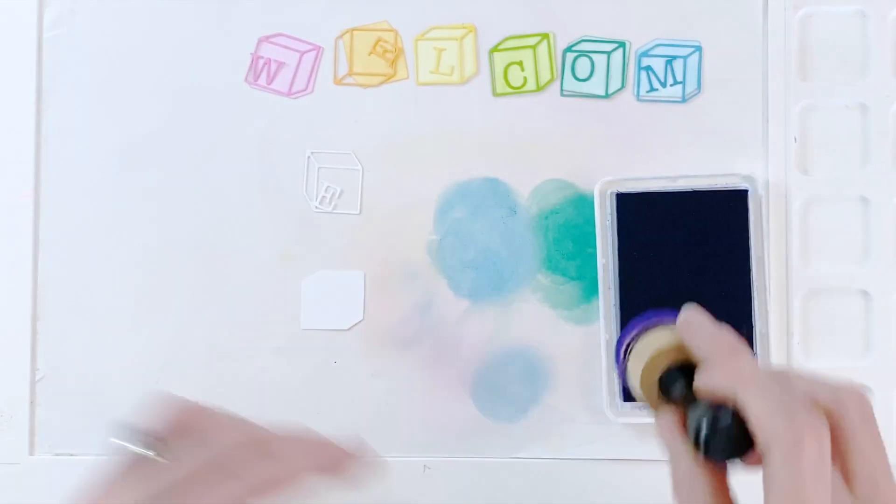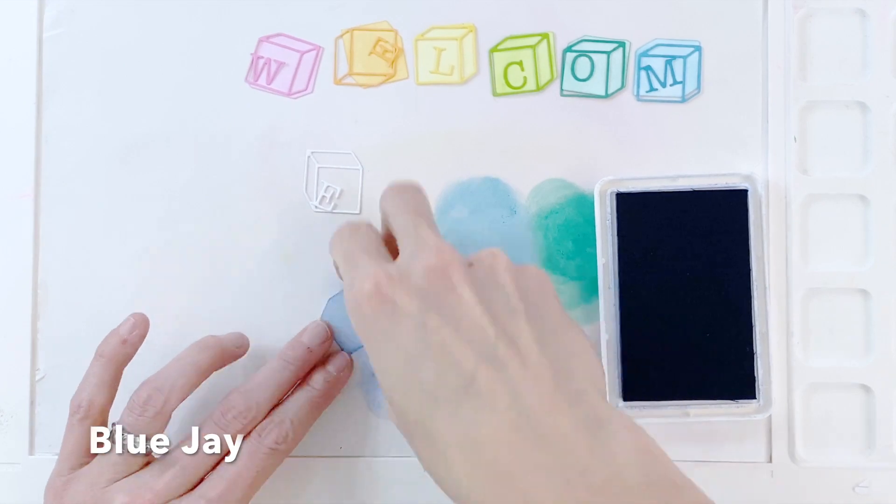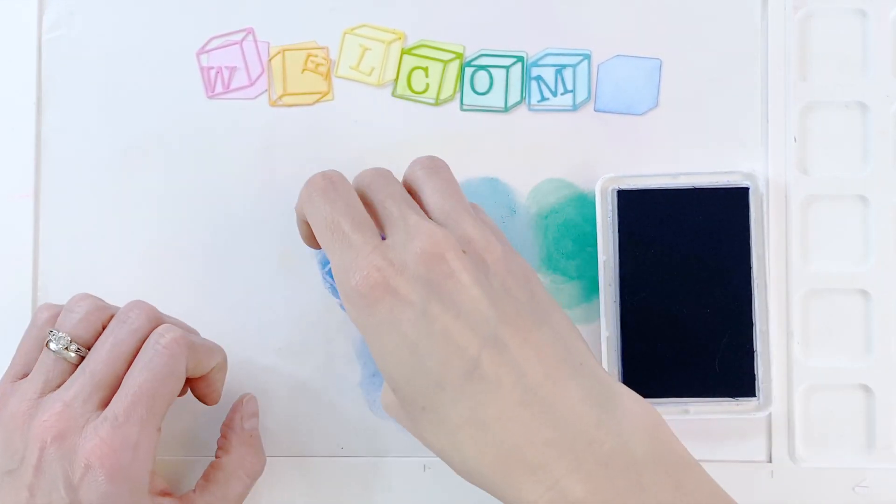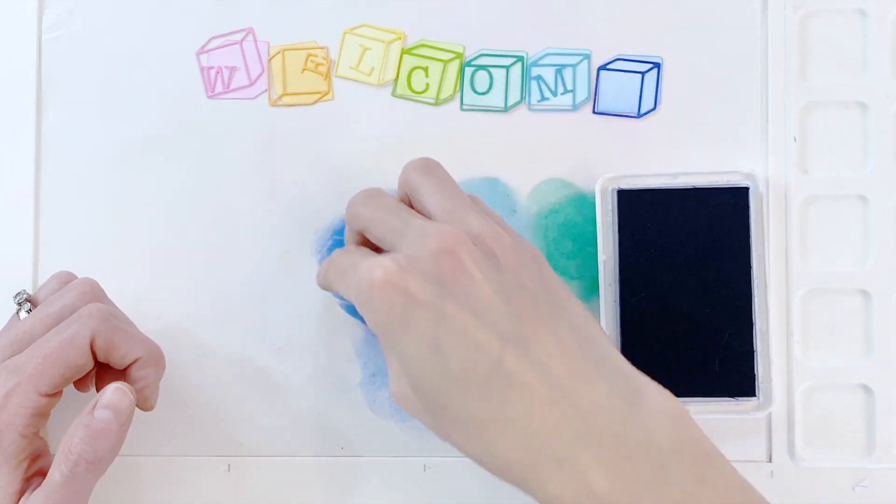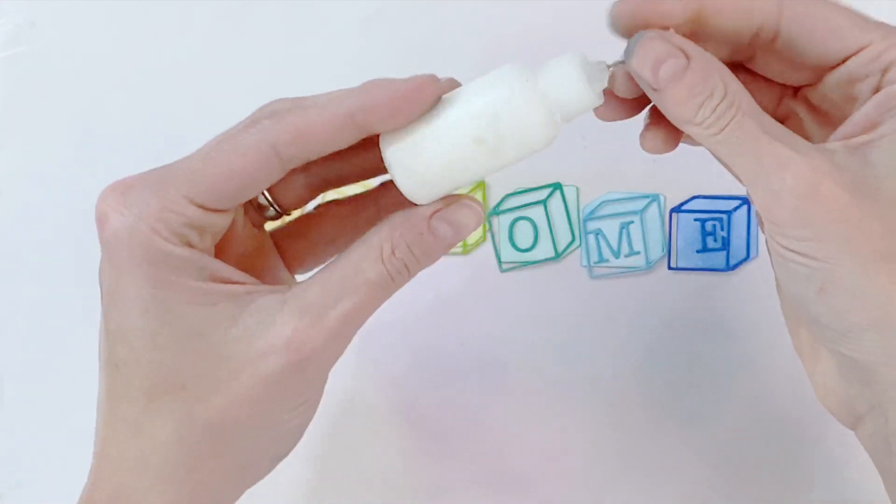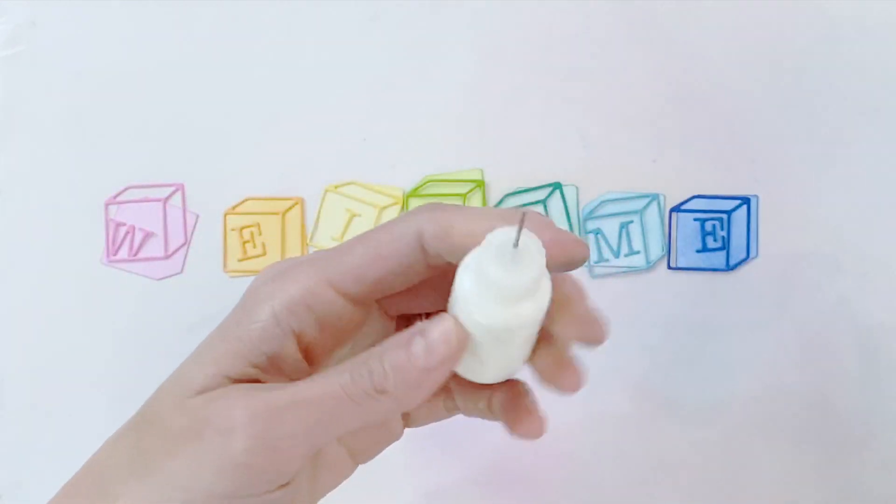And again you can use whatever inks you have at home. I just really like how these pink fresh inks kind of play. I really like the color palettes in this line. Now that I've finished ink blending, I'm now going to adhere my letters and my blocks together.